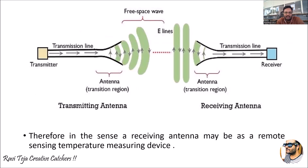Looking at the transmitting and receiving antenna setup: we have a transmitter connected to the antenna via a transmission line through which the signal propagates. The energy required is released into free space. We can also see the E-lines — electric field lines — representing the fields experienced when the signal is being transmitted. Everything the signal carries while moving in free space is considered radiation. Once the receiving antenna receives those electric field lines, the signal travels along the transmission line of the receiving antenna and finally reaches the receiver end.